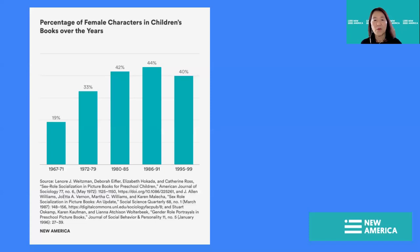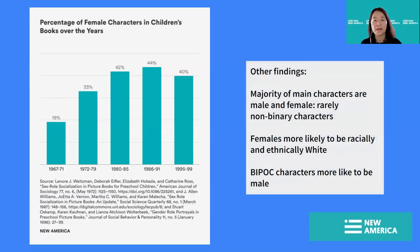One area where we've actually seen a lot of growth is the way females are represented. Over the years, as you can see from this graph, the representation has actually increased in children's books, which is a very positive thing. However, other findings suggest that the majority of main characters are still male and you rarely see non-binary characters. When portrayals are around females in particular, they still tend to be racially and ethnically white, and BIPOC characters are more likely to be male than female or other genders.